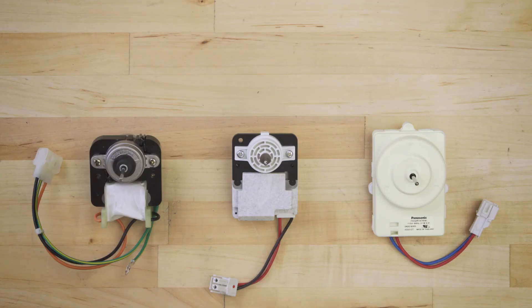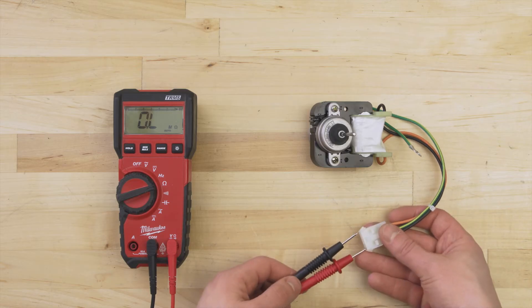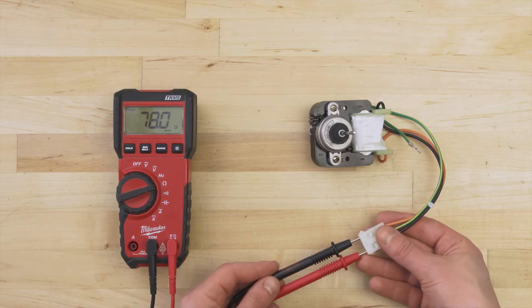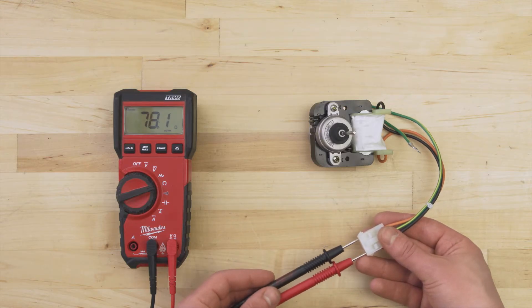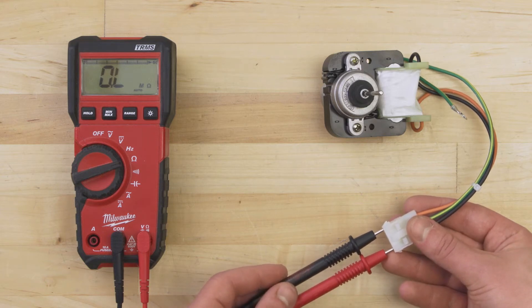If you have a C-frame or round motor, then you can still test for continuity. Set your multimeter to the ohms or resistance setting. Now touch the probes to each terminal. Depending on the motor, there should be a resistance reading of around 20 to 4000 ohms. Now if there's no resistance and no continuity, then the motor is faulty and should be replaced.